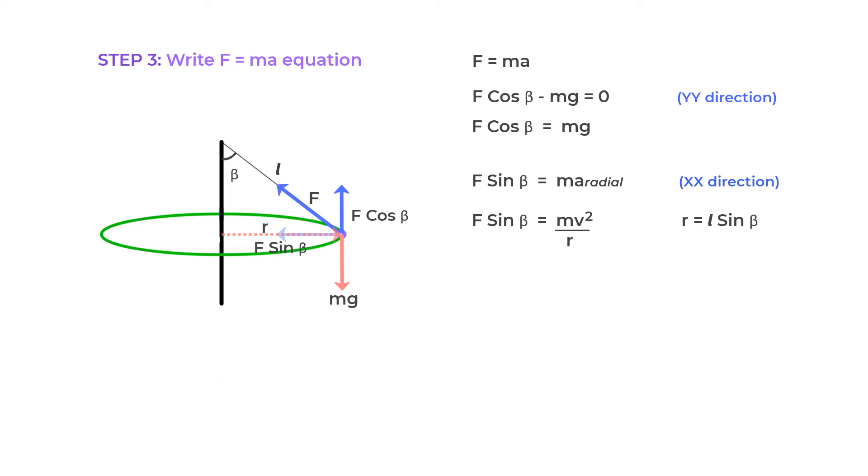Now, step four is expressing the centripetal acceleration in terms of angle beta. So from this equation, A_radial relates to beta as A_radial equals F sin beta upon M. Then using this equation, we can say F equals MG upon cos beta.